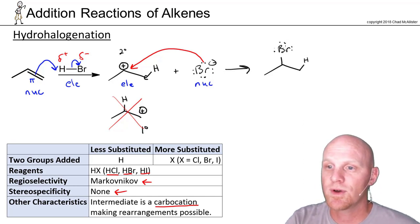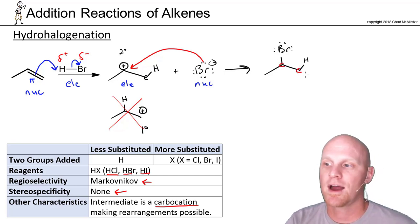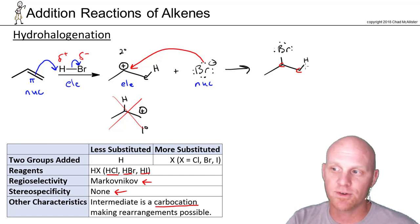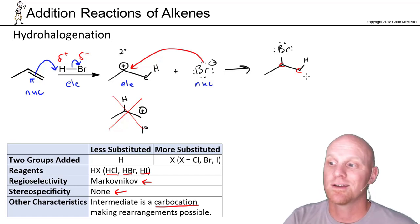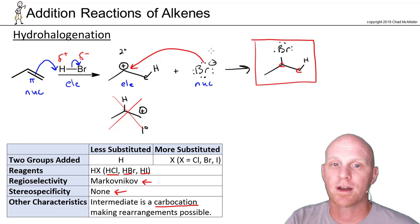If we look at our two new sp3 hybridized carbons, it's this one here and this one here, neither one is a chiral center. This carbon right here has got three identical hydrogens, definitely not a chiral center. This one right here is bonded to both of the methyl groups on the side, so not a chiral center either. Since we formed no chiral centers, we just get one achiral product.